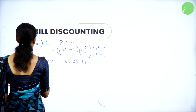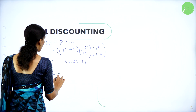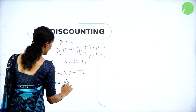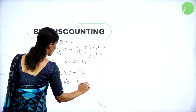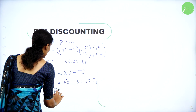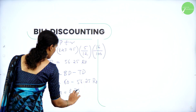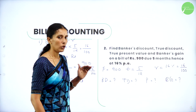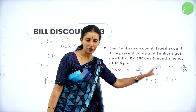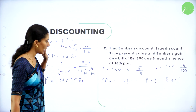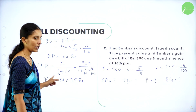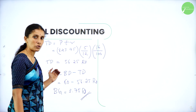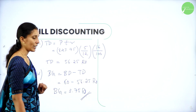The last one is banker's gain. Banker's gain formula is banker's discount minus true discount. Banker's discount is 60 and true discount is 56.25, so banker's gain is Rs. 3.75. So by knowing face value, time and rate of interest, we can calculate banker's discount. With the same three terms we can find present value, and using present value we can find true discount. Knowing true discount and banker's discount gives us banker's gain.